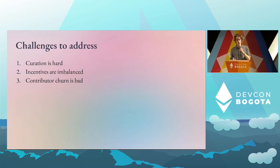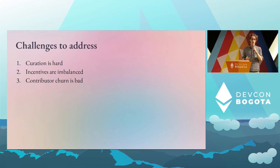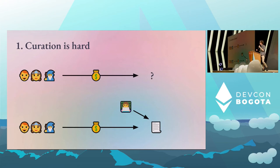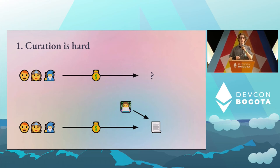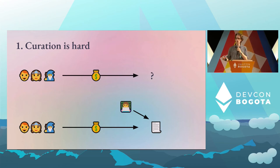The first three challenges: curation is hard, the incentives are imbalanced, and contributor churn is bad. On curation — the ecosystem is very interested in sponsoring core protocol work. Individuals, DAOs, protocols, L2s — they're interested in funding the core protocol, but they don't have a single mechanism to send funds to. Sometimes projects will publicize their Ethereum address for donations, but it's not necessarily easy to find all of them in a single location. Similarly, protocol contributors are interested in receiving funding — some may not be directly working for a team but are doing important infrastructure work — yet there's no single mechanism for them to plug into and be recognized for their work.